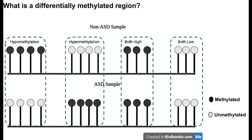The other thing that's important to know is to understand what differentially methylated regions are. Let's assume that we're looking at an ASD and a non-ASD sample. In region 1, you can see that the gray here, which is signifying unmethylation or lower levels of methylation in this genomic region, is seen in ASD samples, whilst in non-ASD samples it is showing black, or methylation. This would then be a hypomethylated region — that would be our conclusion.